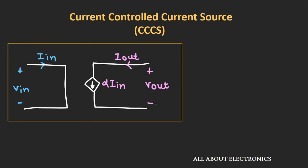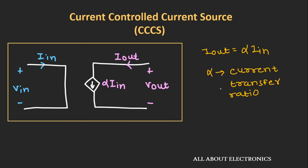The second source is the current-controlled current source, where current is both the controlling and the controlled element. The output current Iout can be given as α×Iin, where Iin is the input current which is controlling the current source. α is the proportionality constant or coefficient of this current source. It is a unitless parameter and is also known as the current transfer ratio.